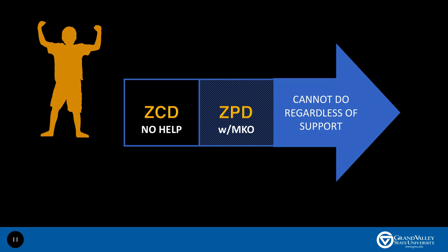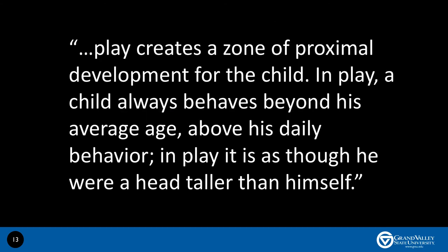So how does this all fit with play? Well, play creates a zone of proximal development for the child without the more knowledgeable other. The play itself creates a virtual more knowledgeable other that allows the child to explore and to develop further its zone of current development even in the absence of the more knowledgeable other. In Vygotsky's words, 'play creates a zone of proximal development for the child. In play, a child always behaves beyond his average age, above his daily behavior. In play, it is as though he were a head taller than himself.' Play is an essential component of not just having the child learn, but learn in a way that develops further and further the child's abilities.